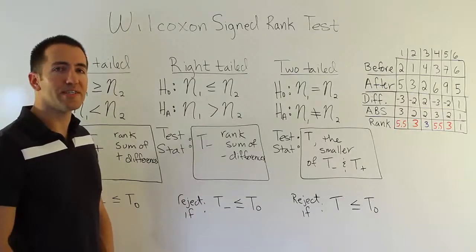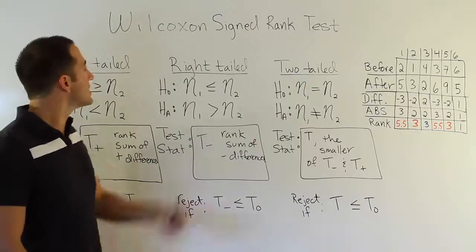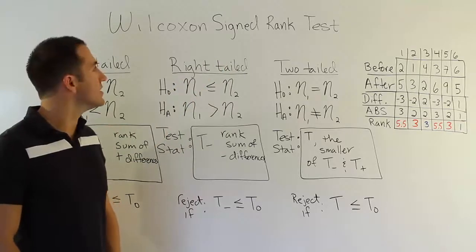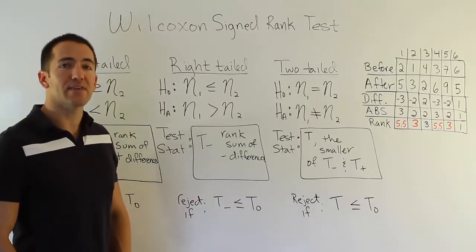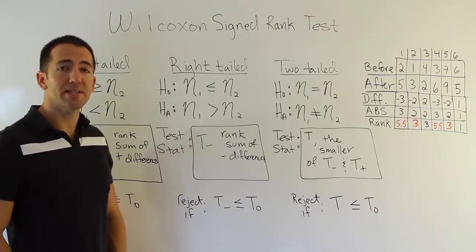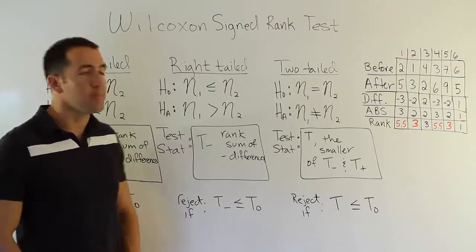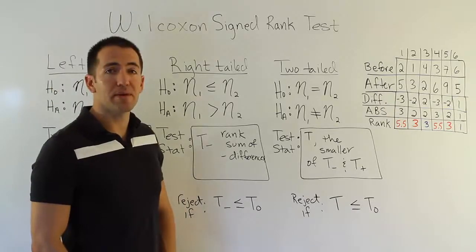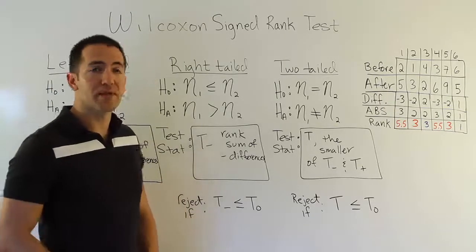In this video we're talking about the Wilcoxon signed rank test. The signed rank test is a non-parametric test that's akin to the matched paired t-test. The matched paired t-test was for dependent samples, and we wanted to compare them. In the matched paired t-test, we compared the means. Here we're going to be talking about a comparison of the medians.